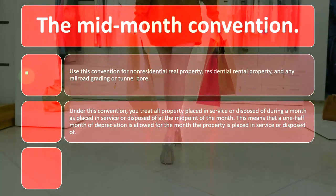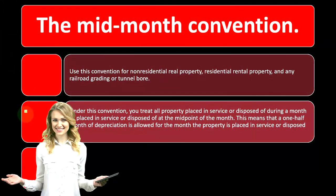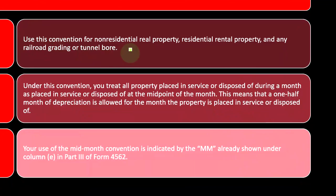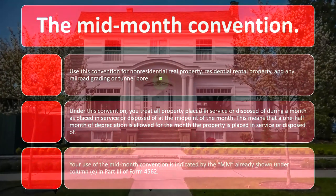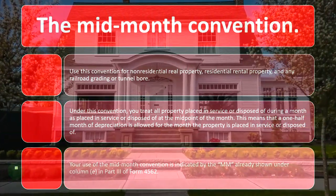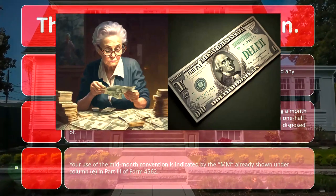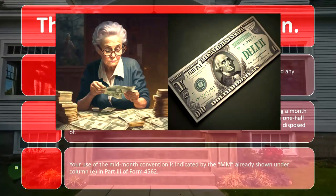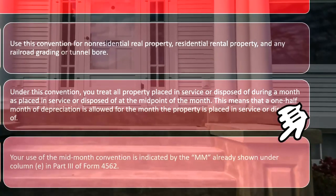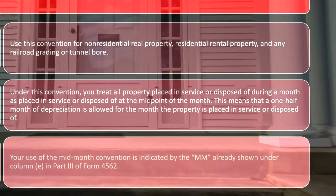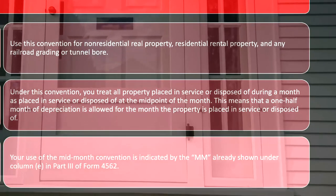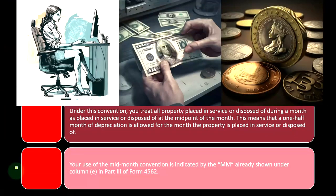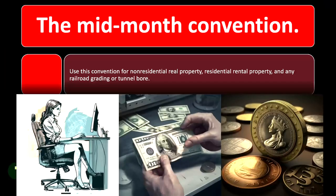This means one-half month of depreciation is allowed for the month the property is placed in service or disposed of. The mid-month convention applies to the big-ticket items — non-residential real property, residential real property, and railroad grading — because the depreciation amounts are significant. That's why they use mid-month rather than a mid-quarter or mid-year convention. The mid-month convention is indicated by 'MM' on depreciation schedules from tax software, already shown under column E in part three of Form 4562.